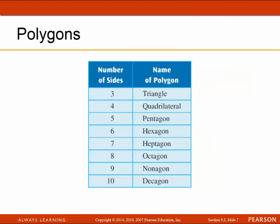Next are the names of polygons. Some of these you've already seen: triangle, quadrilateral, pentagon, hexagon, heptagon, octagon, nonagon, and decagon. There are names for 11 sides, 12 sides, and so on, but eventually it's simply called an n-gon.